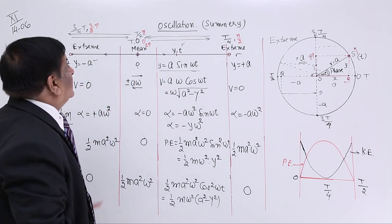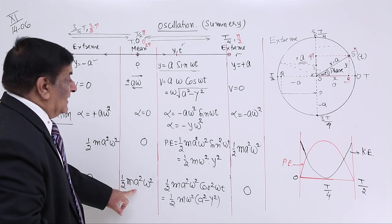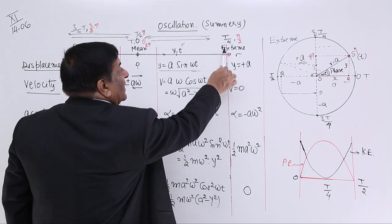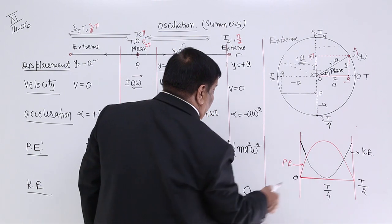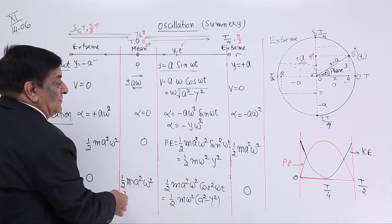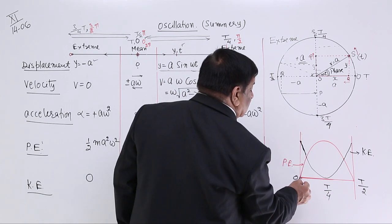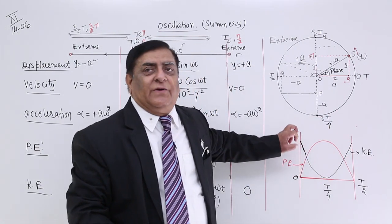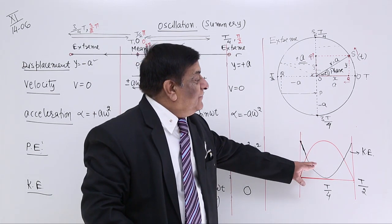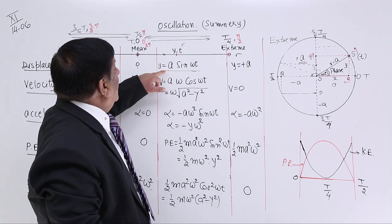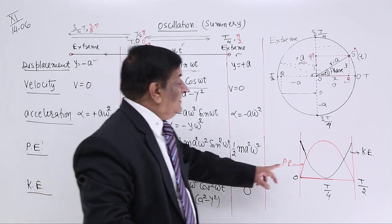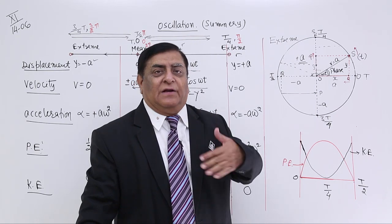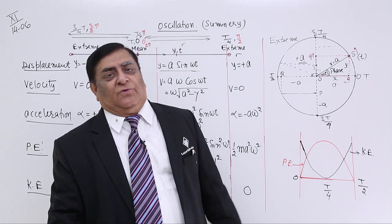The kinetic energy graph is the complement: at time zero (mean position), velocity is maximum so kinetic energy is maximum. At time T/4 (extreme), kinetic energy becomes zero. When it returns to mean position, kinetic energy is maximum again. This is for a half cycle; for a full cycle it repeats. The frequency of the energy graphs is double the frequency of all other parameters, because they complete one cycle in T/2 while displacement, velocity, and acceleration complete their cycle in period T.